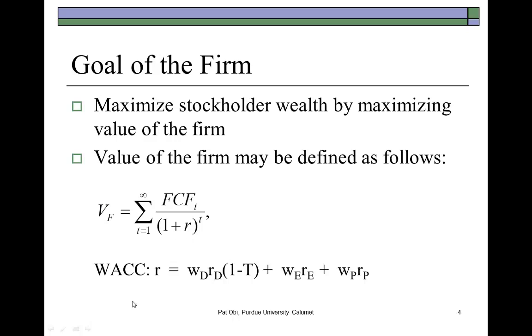To find the weighted average cost of capital, we first calculate the cost of each capital component. In other words, we calculate the cost of debt Rd, the cost of common equity Re, and if necessary, the cost of preferred stock Rp. Wd is the debt ratio, We is the common equity ratio, and Wp is the preferred stock ratio. We find the cost of each capital component and then average them out based on their ratios within the firm's capital structure.